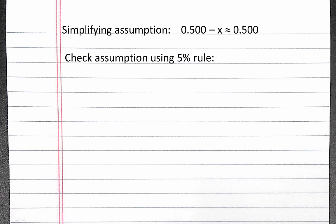Now we have to check that our simplifying assumption is valid using the 5% rule. For our assumption to be valid, the absolute value of our exact value minus our estimated value divided by our exact value times 100% must be less than 5%.